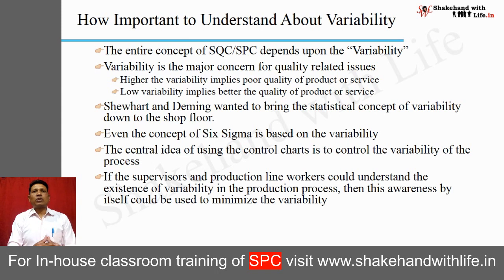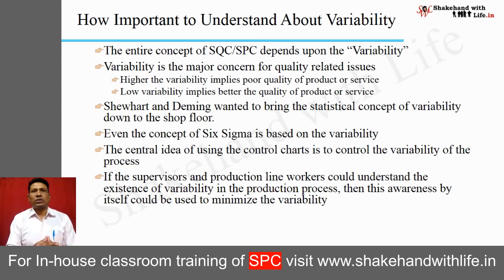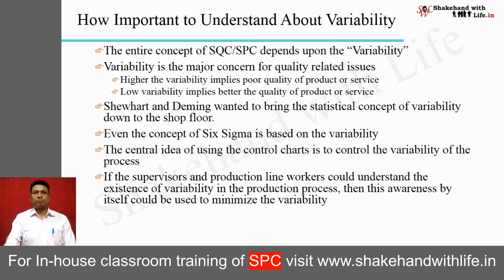If supervisors and production line workers can understand the existence of variability in the production process — whether working in the production line, assembly line, or in quality — this awareness can be used to reduce variability. By learning about variability, they can put their effort toward reducing it. Understanding variability is therefore very important for people working in such areas or departments.